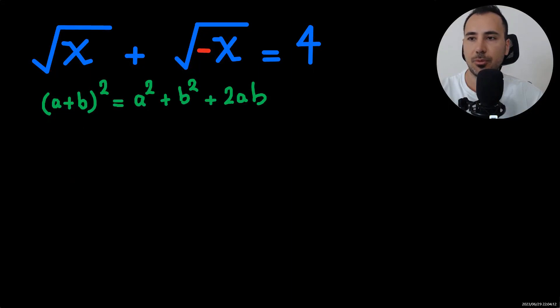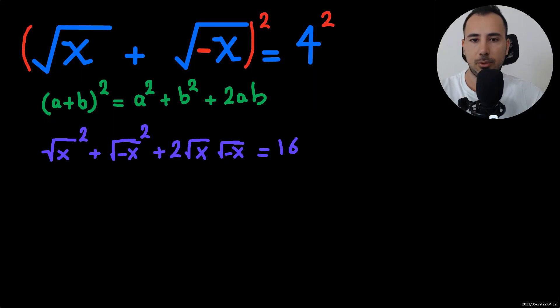So to use this formula, the original equation, we square it and 4 also squared. So we're going to get this. Using the formula, we're going to get this plus 2ab becomes this is equal to 16.